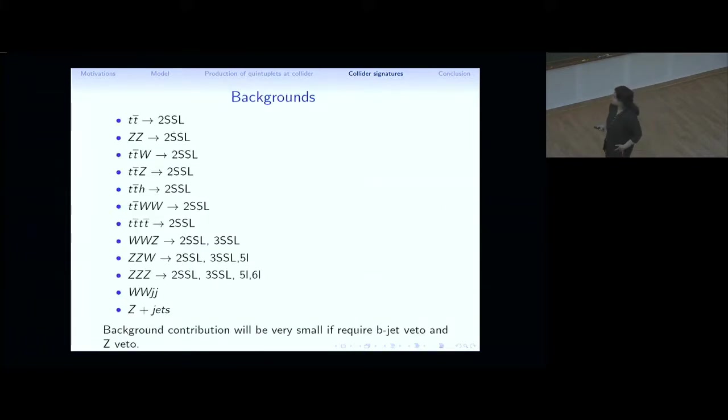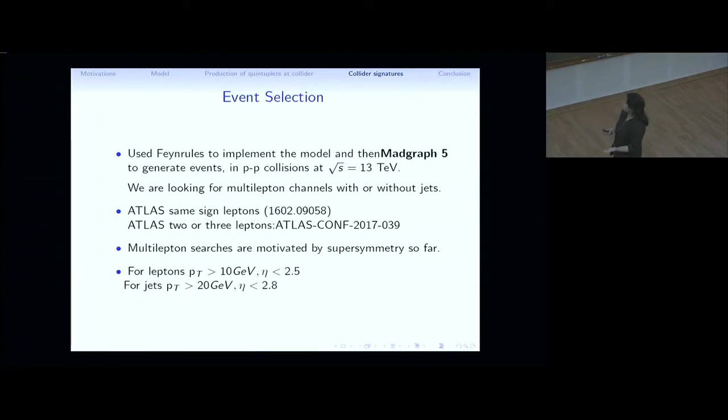Here is a list of backgrounds that we have to consider for this work. And as you can see, mostly two same sign leptons channels will experience some backgrounds, but the three same sign leptons channel will be practically background-free. And similarly, the other leptonic channels. And important thing to note here is the background contributions will be very small if we require a BZ veto or a Z veto. Because as the signals are coming from the off-shell decays of W prime, these will not affect the signal very much. This is something we are looking for.